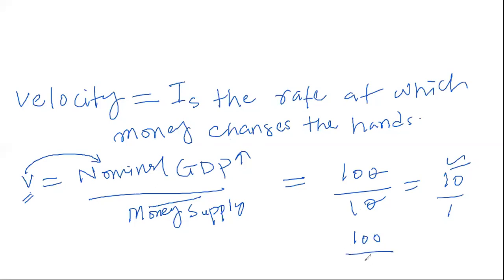If output is 100 million and money supply increases to 20 million, velocity falls to five — meaning a rupee is used in transactions only five times. So velocity is positively affected by nominal GDP and negatively affected by money supply. The money demand must equal the supply of money in equilibrium.